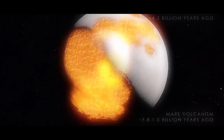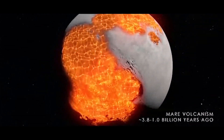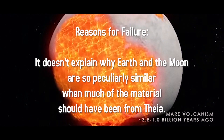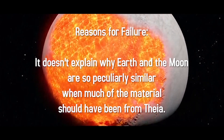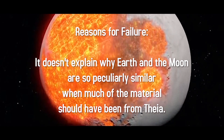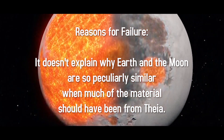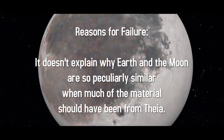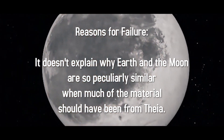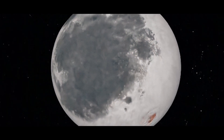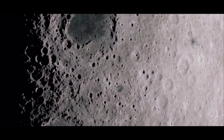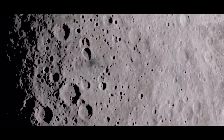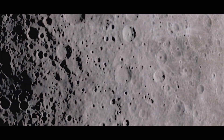Although the giant impact scenario is the most popular, it is not without challenges. The giant impact idea has trouble explaining why the Earth and moon are so peculiarly similar. Most models suggest that more than 60% of the moon should be made from the material of Theia, but rock samples from the Apollo missions suggest otherwise. The moon is also much less dense than our planet, which would likely not be the case if both started with the same heavy elements at their core.